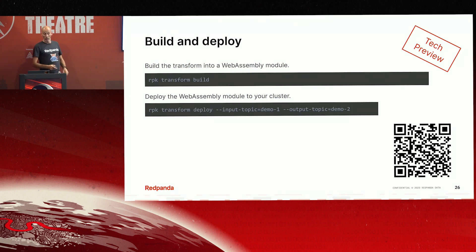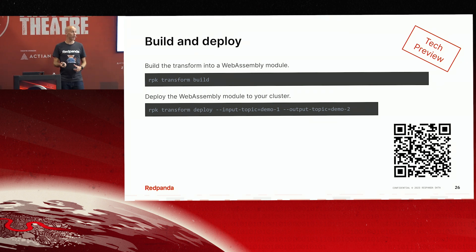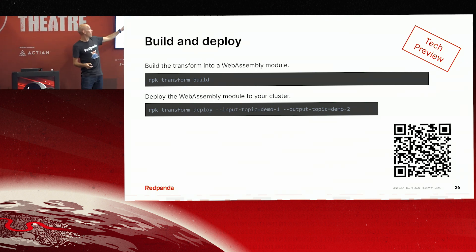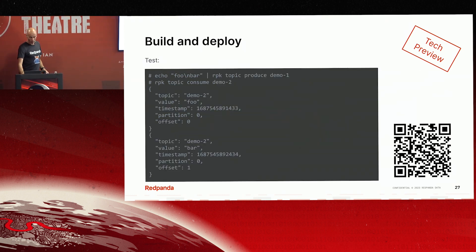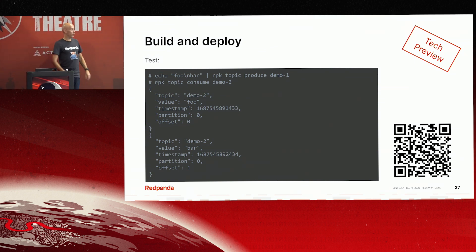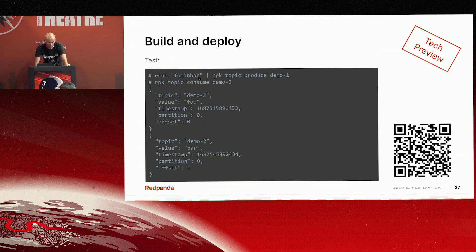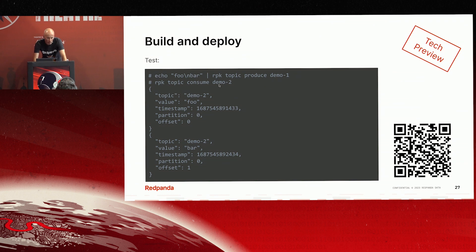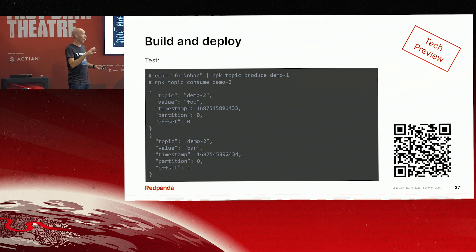When we deploy it, we run RPK transform build — that takes a few seconds — and then RPK transform deploy, telling it the input topic and the output topic. Then writing two records, foo and bar, to RPK topic produce demo-one, and when consuming from demo-two, you can see foo and bar are being written out the other side. Super simple, but this is what it looks like to do a very simple producer-consumer pipeline using WebAssembly.